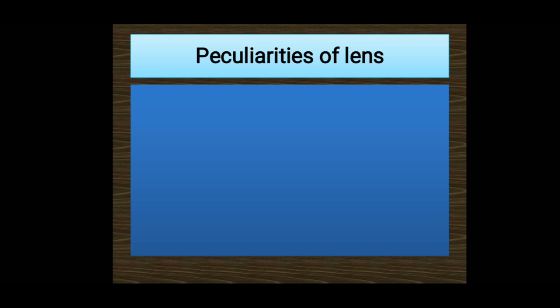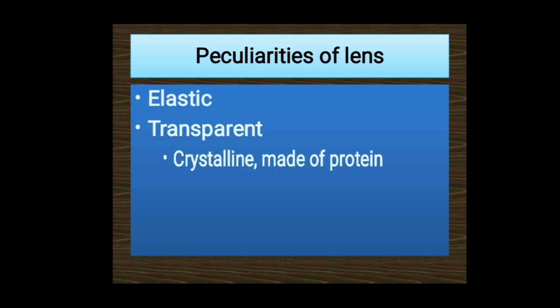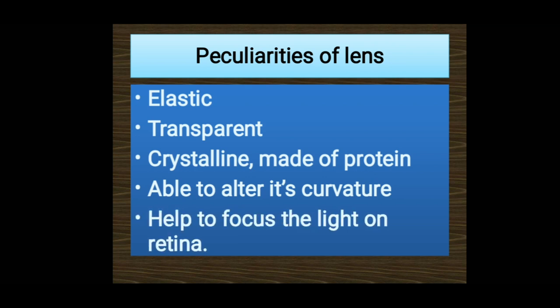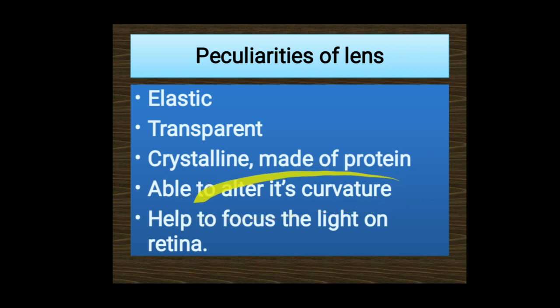Now let's see the peculiarity of our lens. The lens is elastic, transparent, crystalline, made of protein, and able to alter its curvature to help focus light on the retina. The lens is like a capsule structure with many layers, elastic and transparent, allowing light rays to pass through. It can change its curvature — its curvedness — by stretching and contracting, so that it can focus light on the retina.